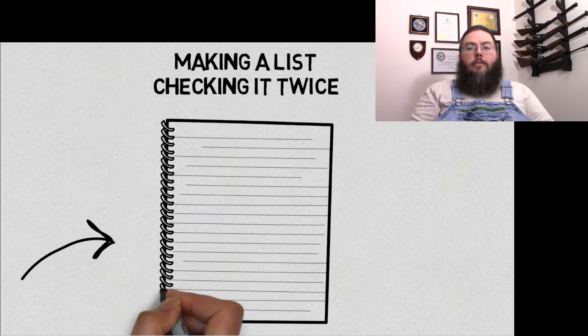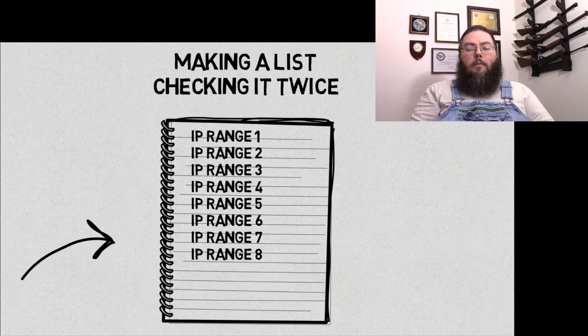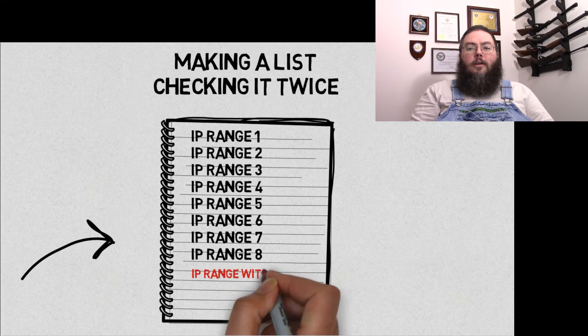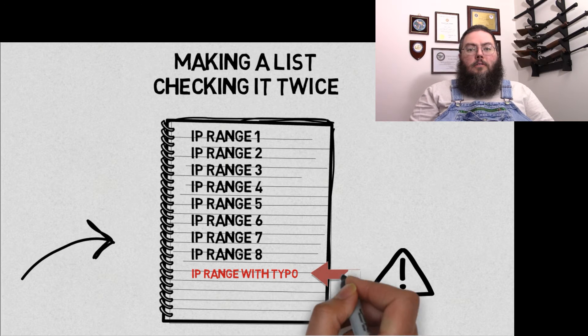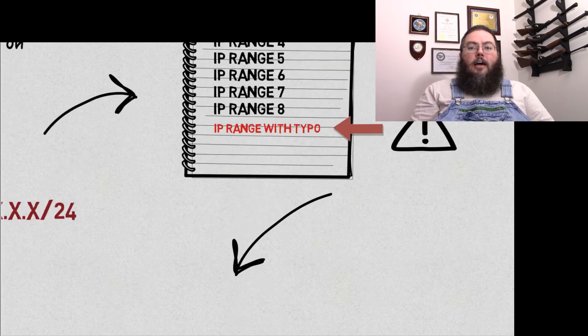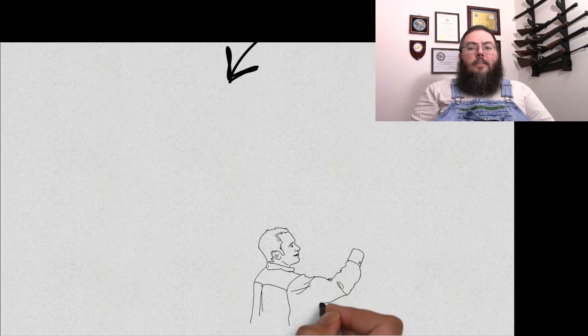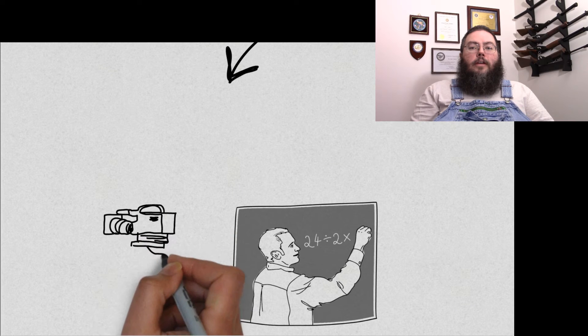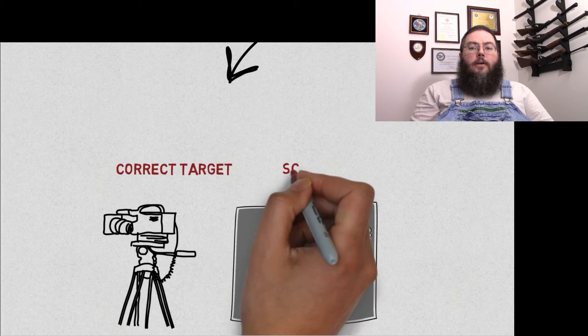Well, this would have been fine had Charles Ray not skimped on his duties at the beginning. Because one of the ranges that was in this scoping document was actually incorrect. The customer had transposed a digit or two in one of the ranges. It was still a valid IP range, just not valid for this customer. It turns out that this IP range happened to be for a school district. A school district with a lot of security cameras.